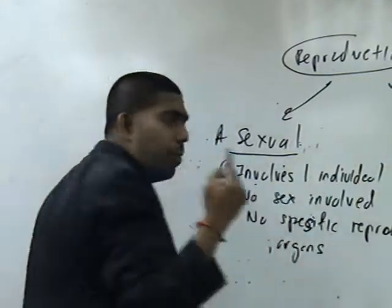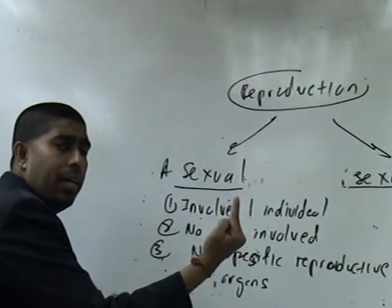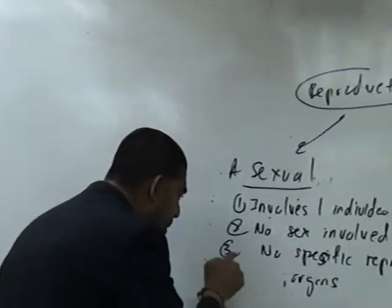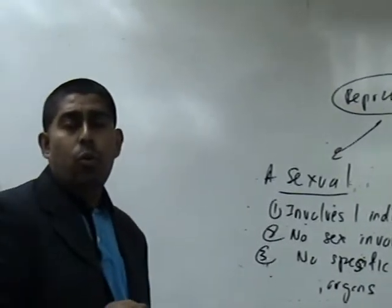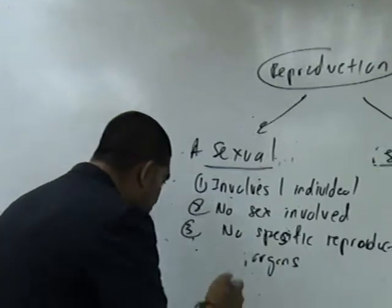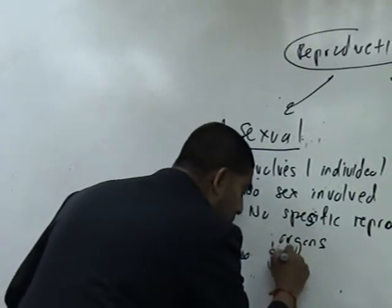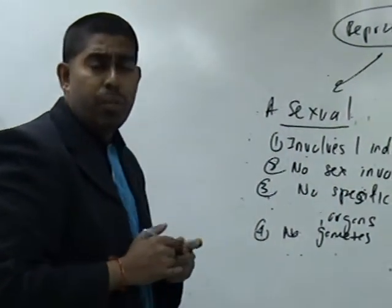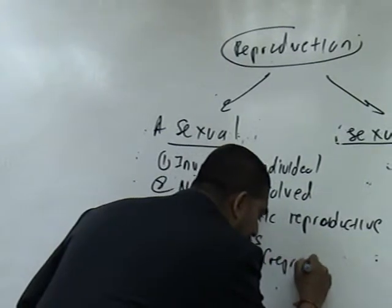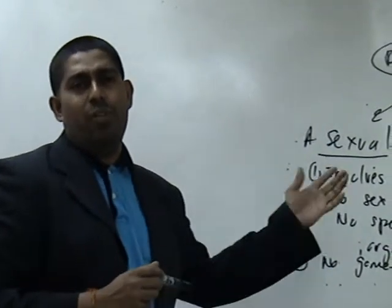For asexual reproduction: Number one — it involves only one individual. Number two — there are no sexes involved, meaning there is no male and no female. Number three — there are no specific reproductive organs involved. Number four — there are no gametes involved. Gametes means reproductive cells. So there are no reproductive cells involved in asexual reproduction.